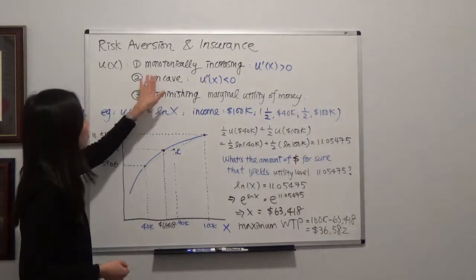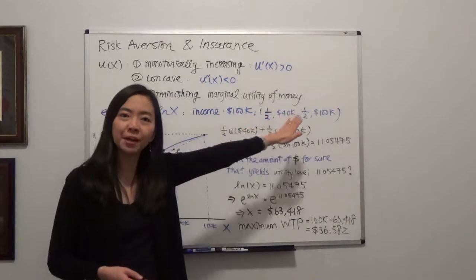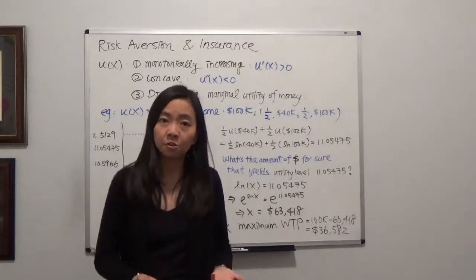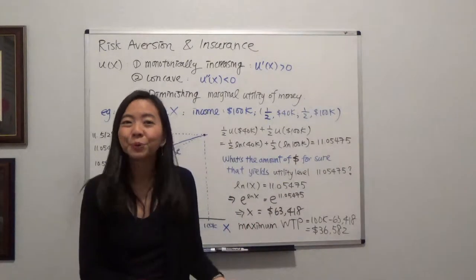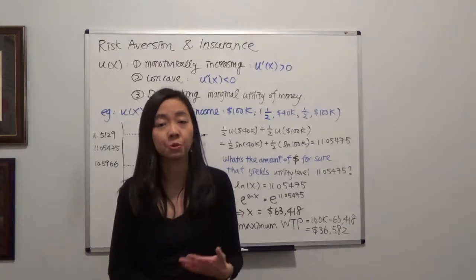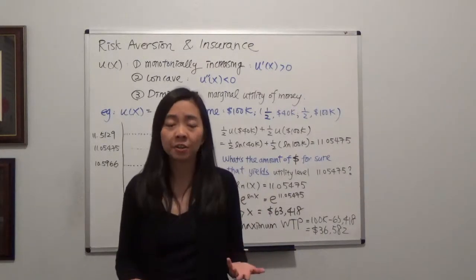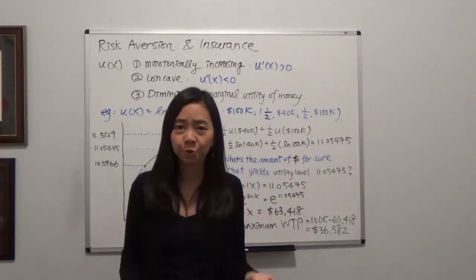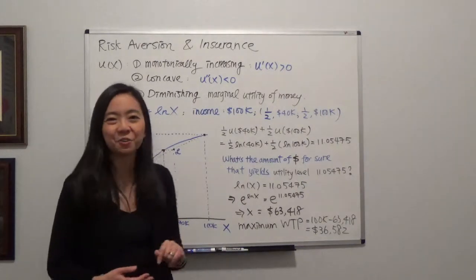Notice that with this kind of utility function, you have diminishing marginal utility of money, meaning if you're poor, then 10 extra dollars is going to give you a very high marginal utility. Because you're poor, so 10 dollars, you can buy maybe three or four meals. But for a millionaire or billionaire, this 10 extra dollars doesn't give you much marginal utility, because you're already very wealthy. So we have diminishing marginal utility of money.